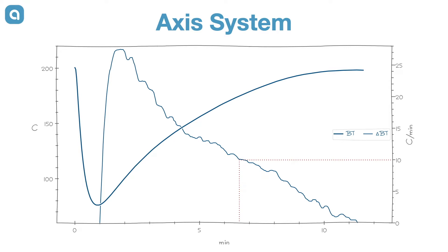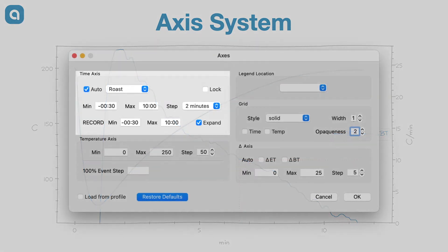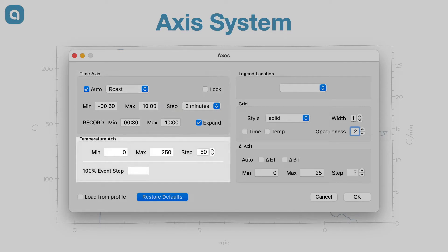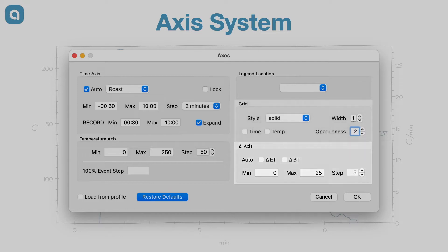The layout of the axes is configured in the axis dialog, which is opened via the corresponding menu item of the config menu. The dialog has five sections, each with configurations for a specific part. While the default axis settings are fine for most situations, it is good to know the function of each of those controls.